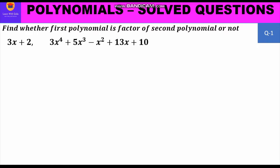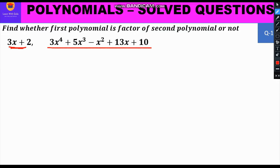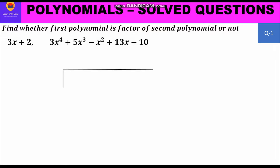Let us start with the first question. The first polynomial is 3x + 2 and the second polynomial is 3x⁴ + 5x³ - x² + 13x + 10. The first polynomial is the divisor and the second polynomial is the dividend. We have to find out whether the divisor is fully dividing the dividend. If we get remainder 0, we can say the divisor is a factor. We set up the problem with 3x + 2 outside and the dividend inside.